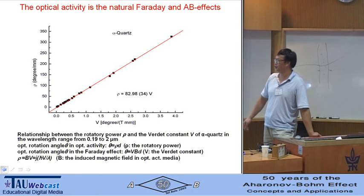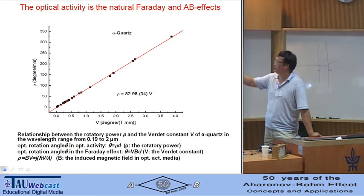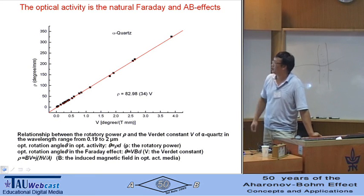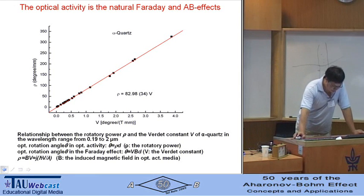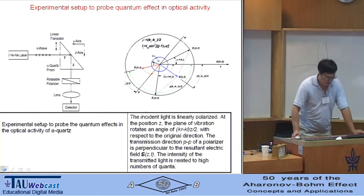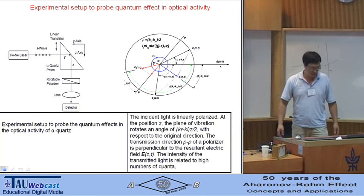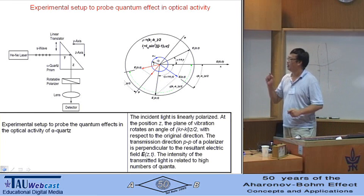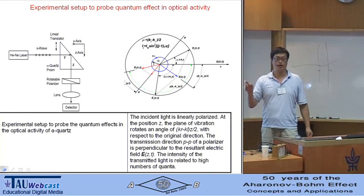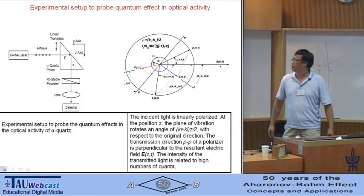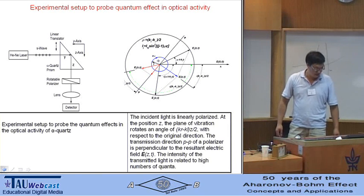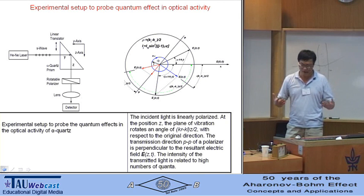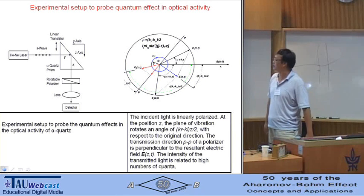That means the induced magnetic field in alpha quartz is about 82 Tesla. Due to this induced magnetic field in the propagation direction of the light, we see that the optical activity is a quantum effect.